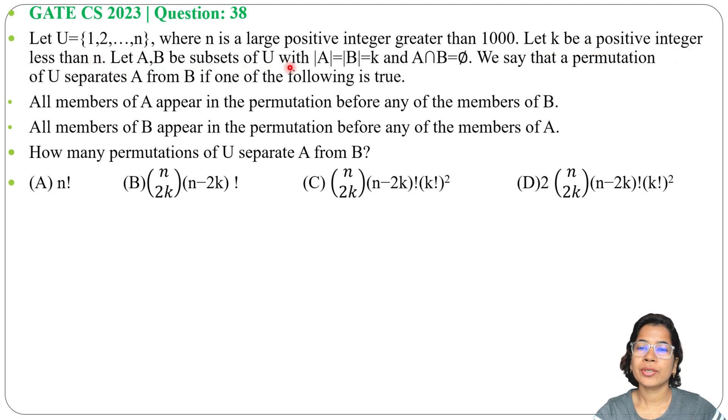Let A, B be subsets of U with |A| = |B| = k, meaning A length and B length are equal and both are k. And A intersection B equals ∅ means there are no common elements.